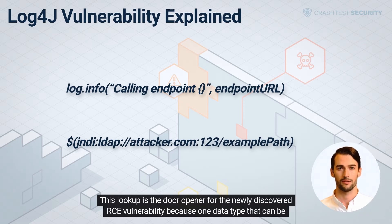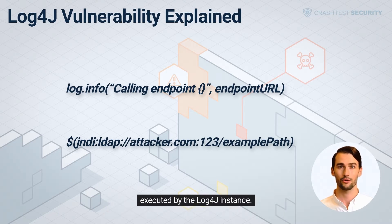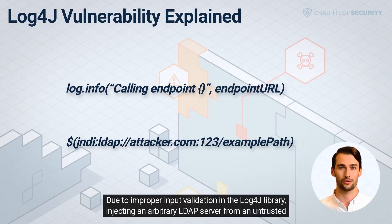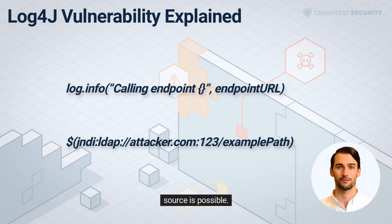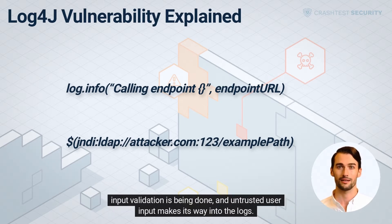This lookup is the door opener for the newly discovered RCE vulnerability, because one data type that can be returned from the LDAP server is a URI pointing to a Java class, which is then loaded into memory and executed by the Log4j instance. Due to improper input validation in the Log4j library, injecting an arbitrary LDAP server from an untrusted source is possible. Since developers generally assume that data written into the logs is handled as normal text, no further input validation is done, and untrusted user input makes its way into the logs.